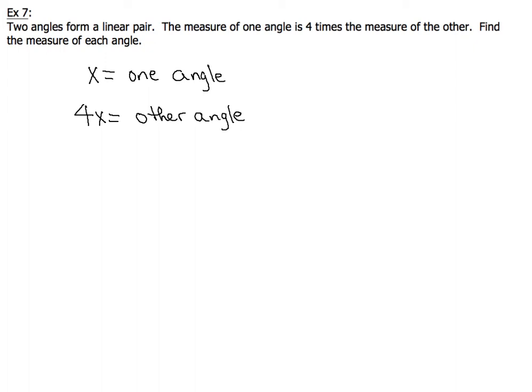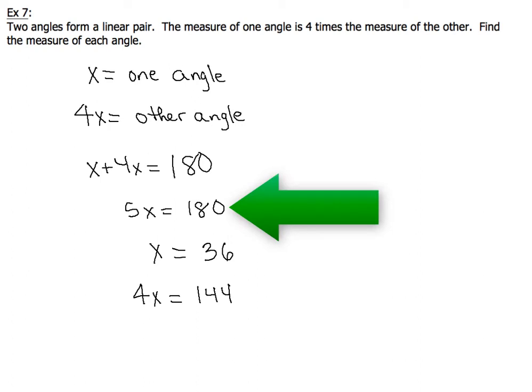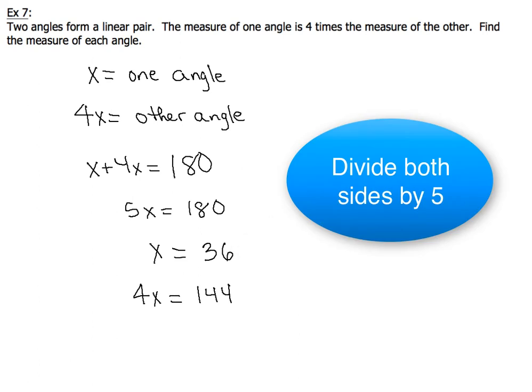We use the fact that the two angles form a linear pair to write an equation and solve for x and 4x. We set x plus 4x equal to 180. Combining like terms gives us 5x equals 180. Dividing both sides by 5 gives us x equals 36.